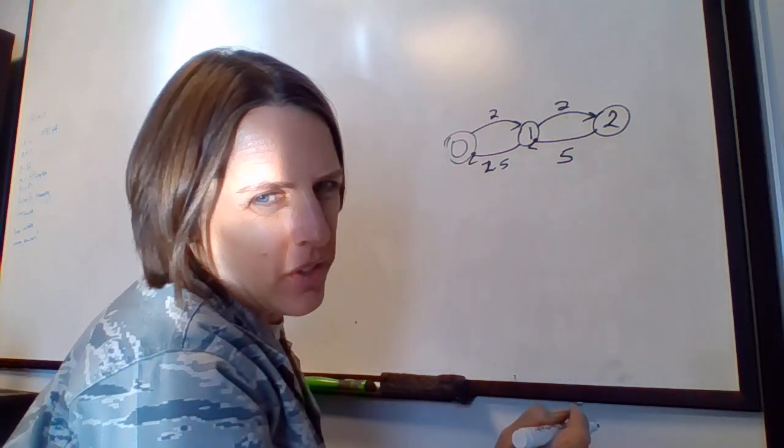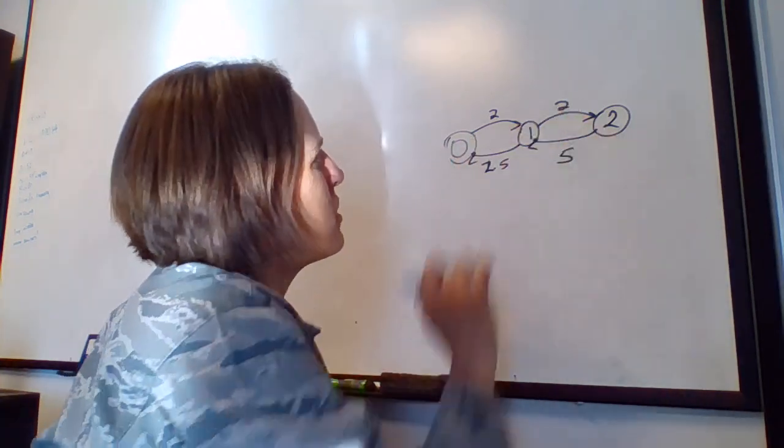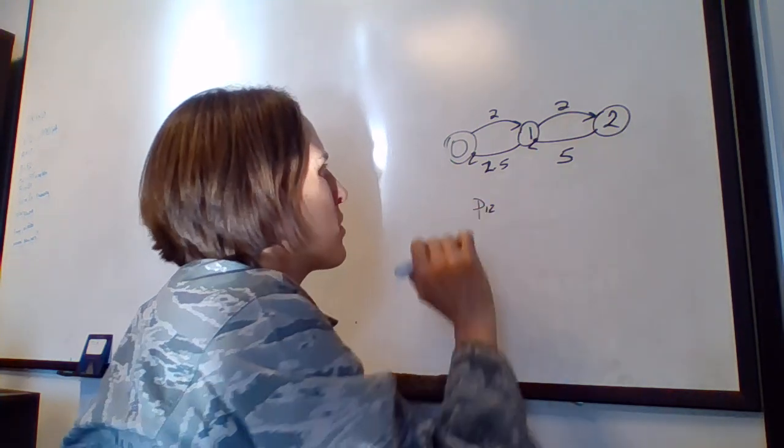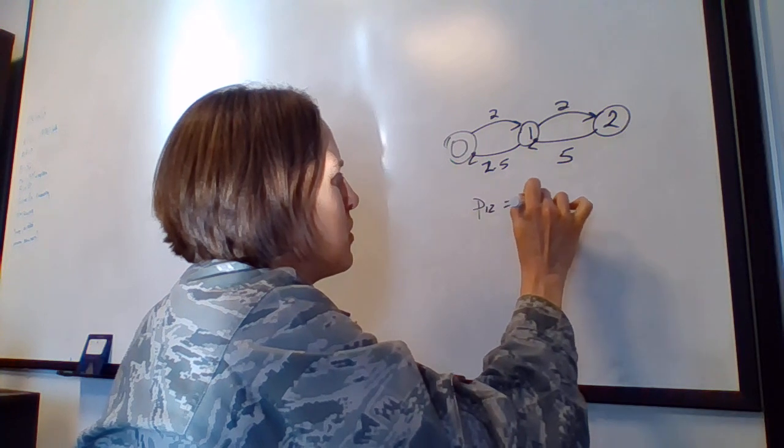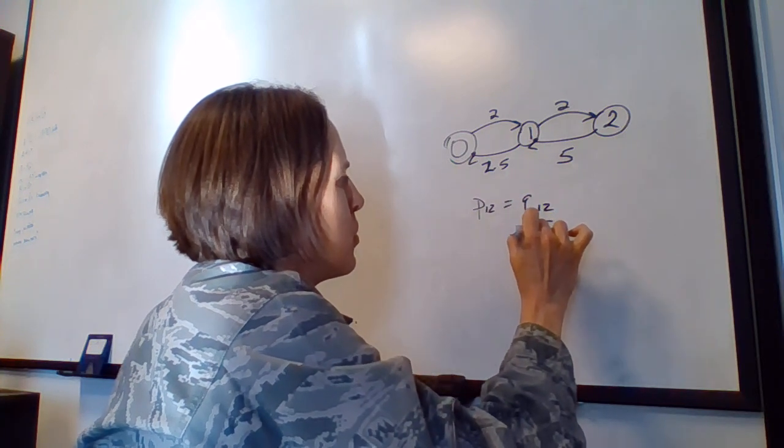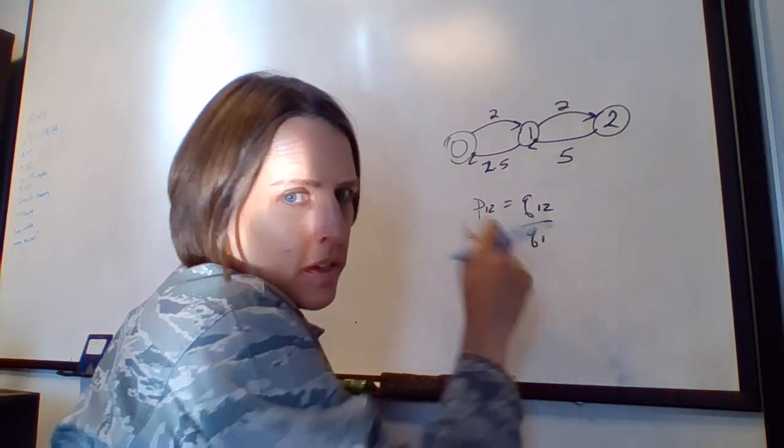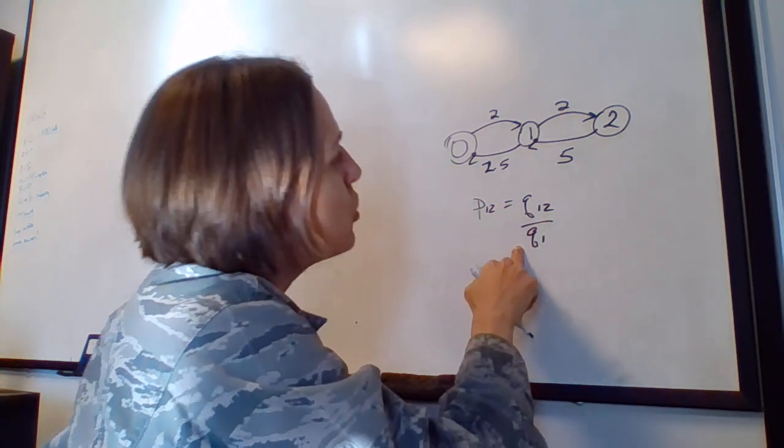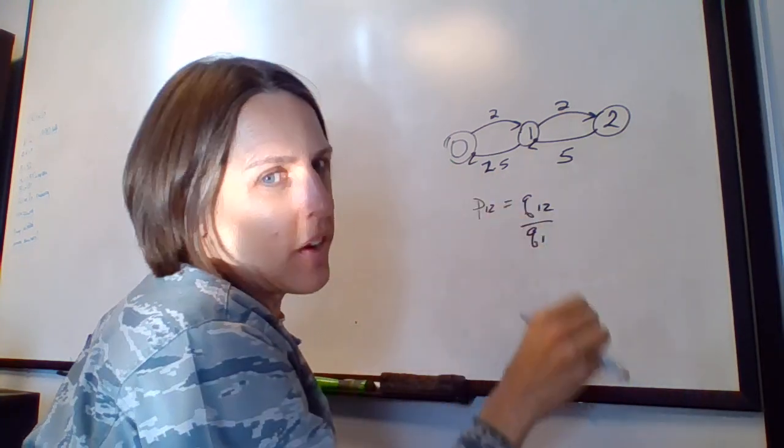So let's say we wanted to know the probability of going from state 1 to state 2. We're going to call it P1-2. This is going to be equal to Q1-2 over Q1, where Q1, listen carefully...